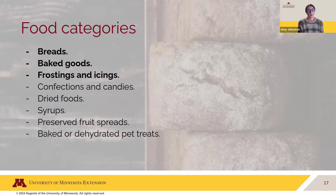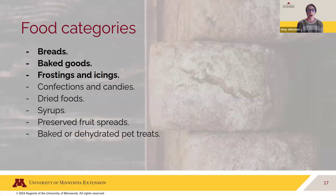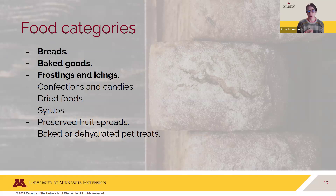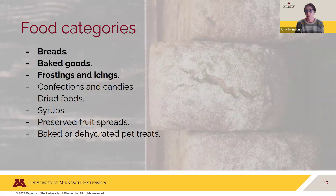The food categories that all use water activity as a control for food safety include breads, baked goods, frostings, icings, confections and candies, dried foods, syrups, preserved fruit spreads, and baked or dehydrated pet treats — keeping cottage foods in mind. I've bolded breads, baked goods, frostings, and icings because these are the categories I'm going to focus on as examples when talking about testing and recipe considerations. For more information on dried foods, you can watch last month's webinar, and for preserved fruit spreads, review the May webinar.